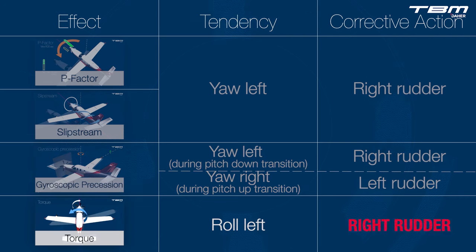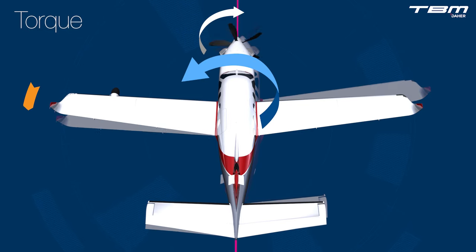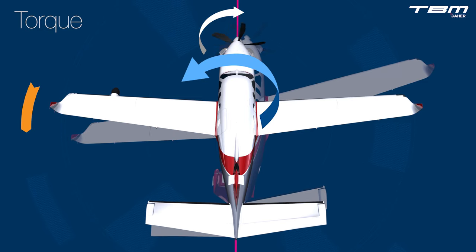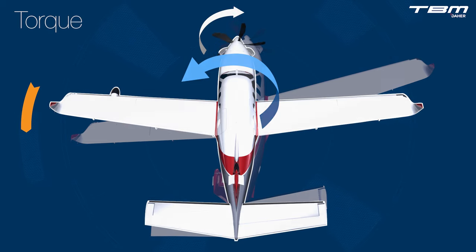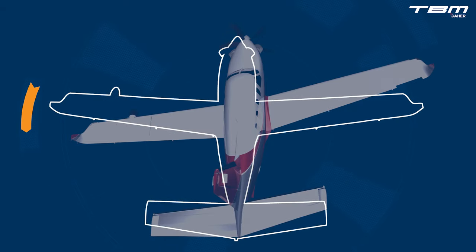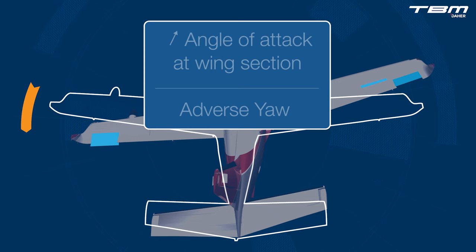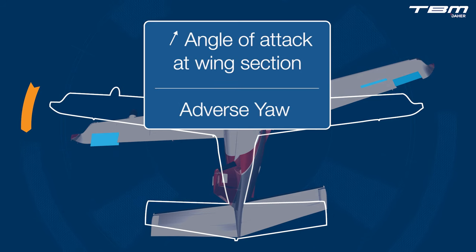Torque, which is most obvious with an abrupt increase in power, is different. Torque induces roll and is strongest when flying slowly, when the weather-veining properties of an airplane are at a minimum. The primary flight controls used to roll an airplane are the ailerons, but ailerons have two byproducts which are undesirable when flying at minimum controllable airspeed.